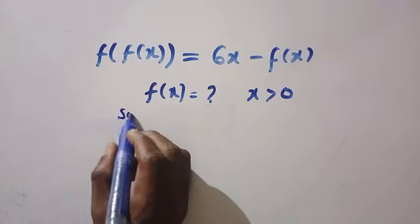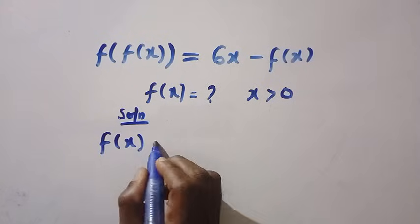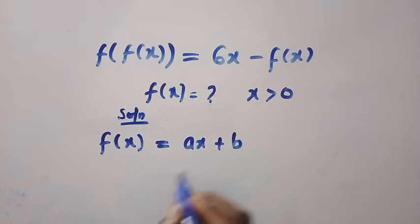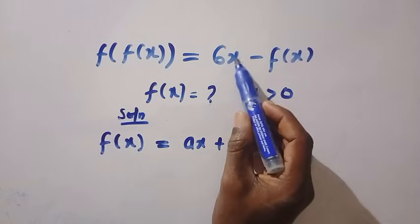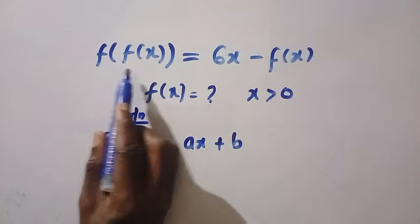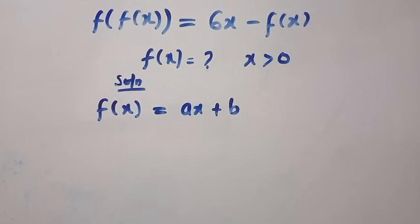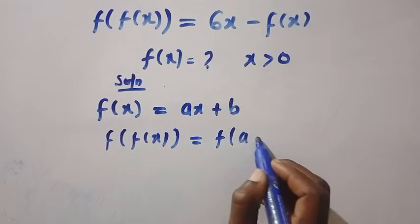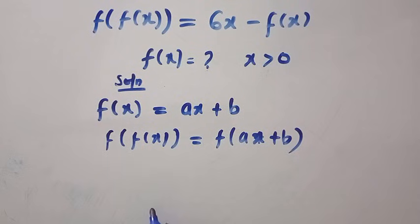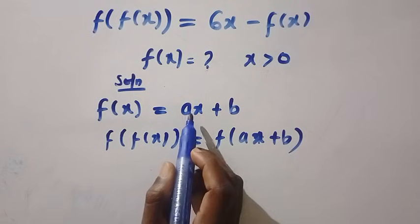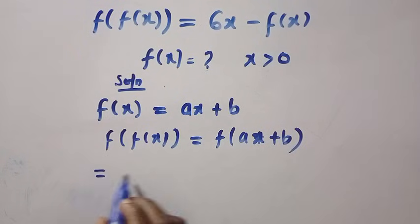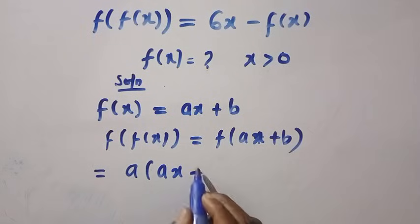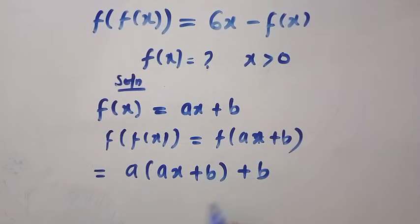If I assume that f of x equals ax plus b, we need to get f of f of x from here. Taking f of f of x, we have this equals f of ax plus b. We are going to replace every single x with ax plus b. Then we have a into bracket of ax plus b, then plus b. By expanding this, we have a squared x plus ab plus b.